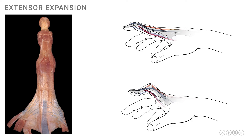It then splits into three segments. The first one of those is the middle slip, which goes and attaches onto the base of the middle phalanx. There are additionally two lateral slips, and these continue on their way up to the terminal phalanx. Just before they terminate, they form the terminal slip, and the terminal slip then attaches onto the base of the distal phalanx. So this is the extensor expansion, and it allows for some interesting movements and control of manual dexterity.